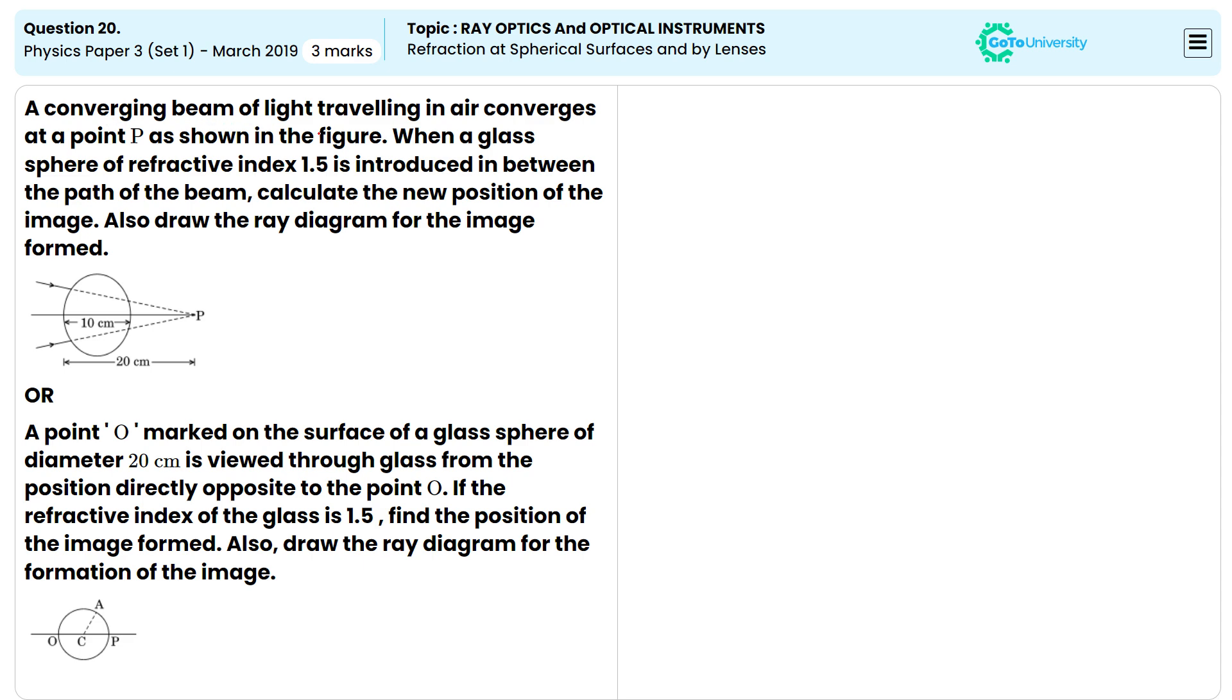A converging beam of light traveling in air converges at point B as shown in the figure. When a glass sphere of refractive index 1.5 is introduced in between the path of the beam, calculate the new position of the image and draw the ray diagram for the image formed.